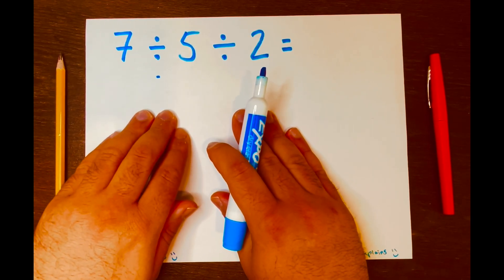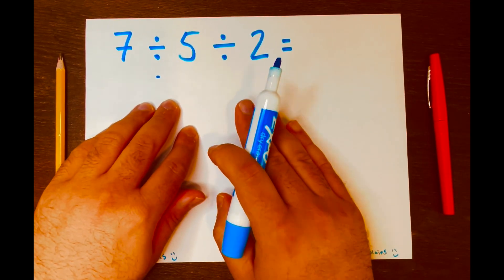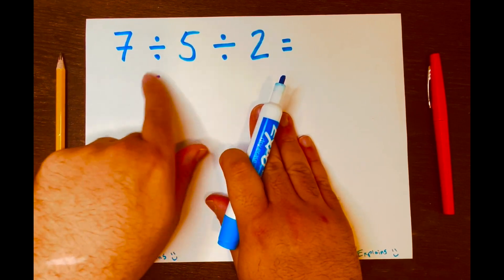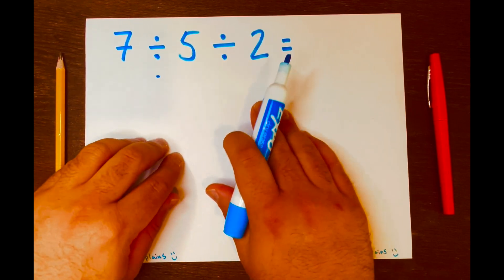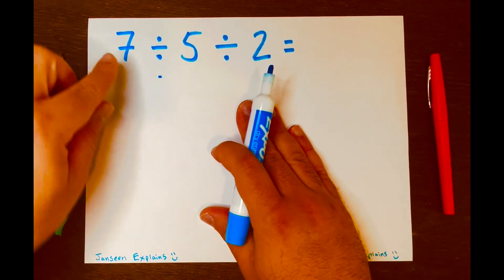Now according to PEMDAS, when looking at this problem, when a problem contains only division, which we do see only division, you must perform the operations from left to right. So let's go ahead and do that.